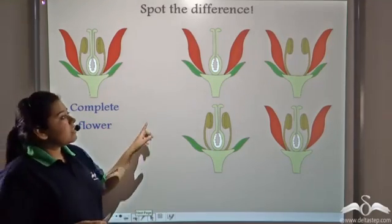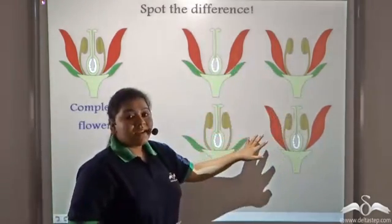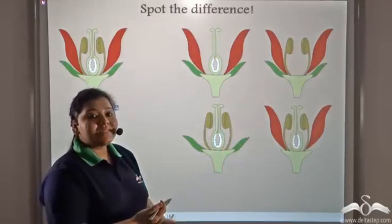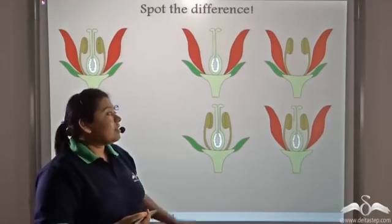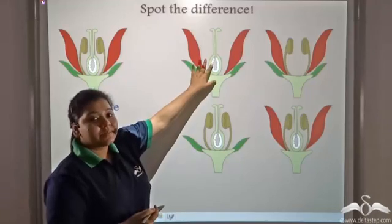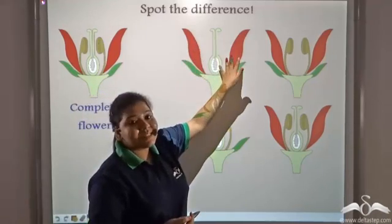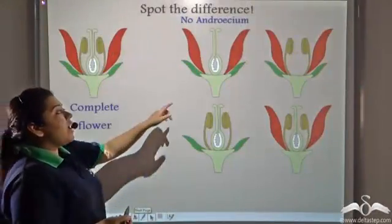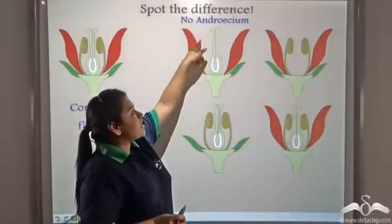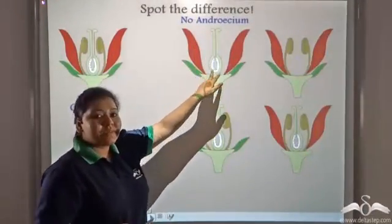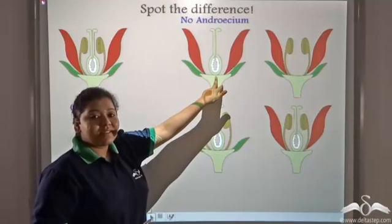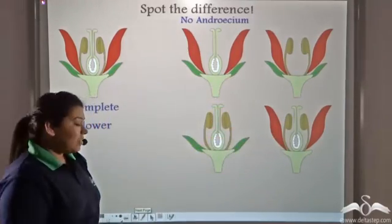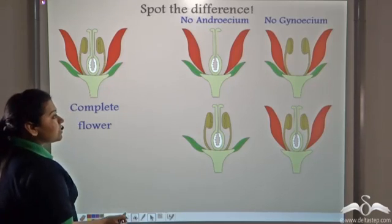Now notice these flowers. Can you spot the difference between all these flowers? Look at the first flower — it does not have an androsium. The androsium is missing. Similarly, in the second flower, the gynecium is missing.